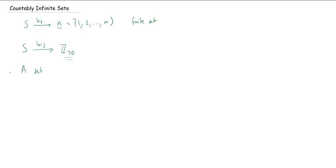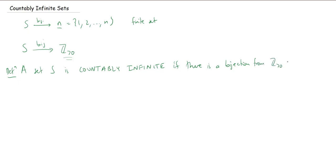A set S is countably infinite if there is a bijection from the set of positive integers to S. We're writing it in this direction because it's a bijection, and we have a theorem that says if you have a bijection, then you get an inverse bijection going the other way. I want to make it obvious that I'm using the positive integers to count elements of S. It's conceptually easier to write it down in this direction, but it doesn't matter because bijections work in both directions.